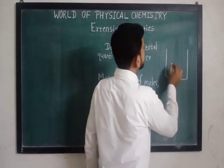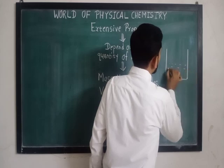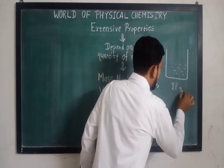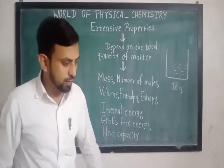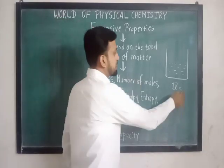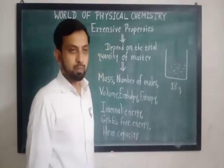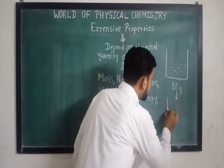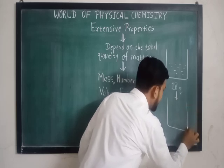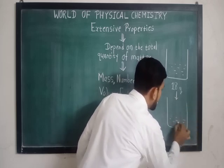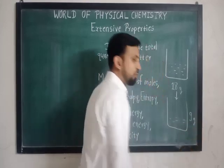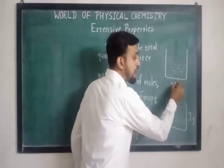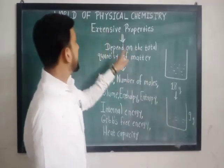For example, if we take a particular mass — that is 18 grams of water in a beaker as our system — when we divide this system, that is if we transfer that water into another beaker, we exactly transfer 9 grams of water. That is, we divide the system. At that time, this property — that is the mass — is also divided.